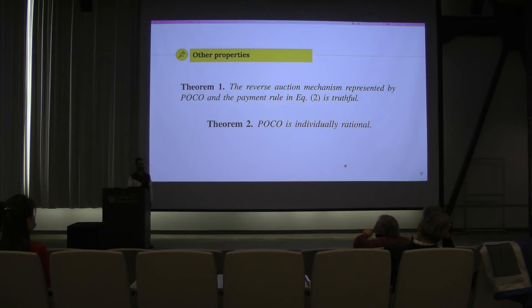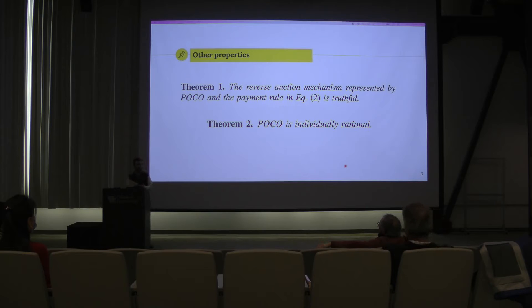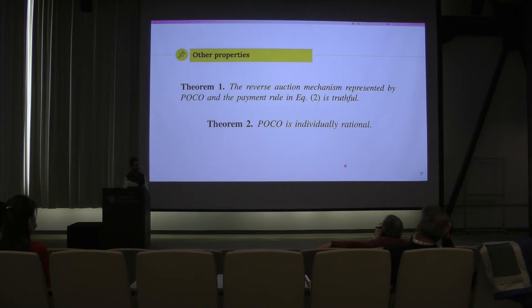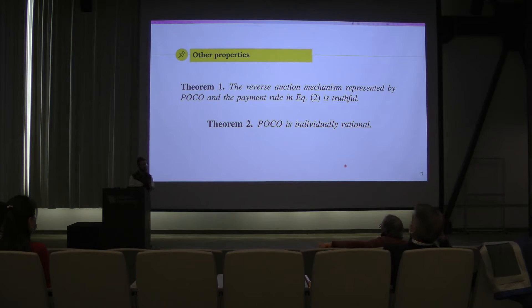The property of truthfulness works as follows: because we want to minimize cost, a ridiculous bid would simply not be selected. But in case a user is trying to use the system maliciously, the property of truthfulness guarantees that would not be possible. There is a theorem to prove how that works, based on how we pay the users given the money they are asking. The key is that we don't pay users the exact amount they ask for, but a slightly different amount, which is usually greater than what they are asking for.